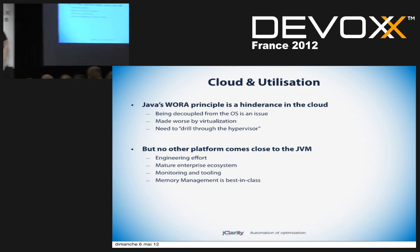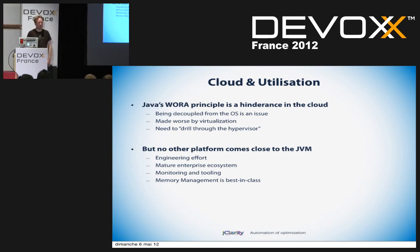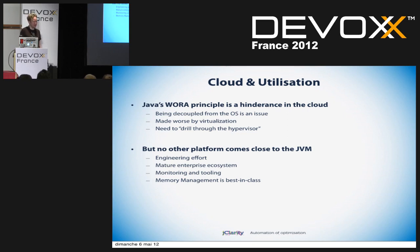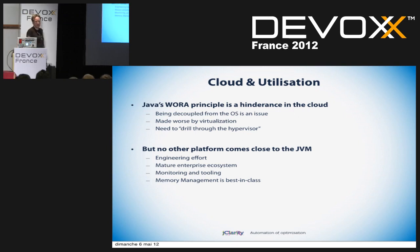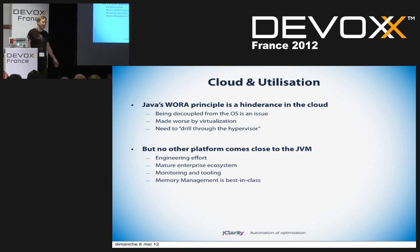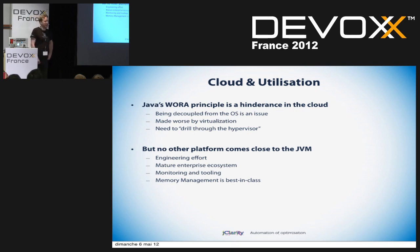In theory, cloud will provide better utilization in the end — you can have smaller, bigger boxes. One of my first jobs was at an investment bank, and the mainframe hackers with long grey beards would always say 'all you guys are really doing is reinventing the mainframe.' None of the other platforms out there come anywhere near the JVM in making decent use of compute resources — the engineering effort, the ecosystem, the tooling, the mindshare. You really wouldn't want to start again.